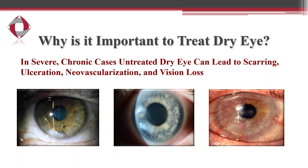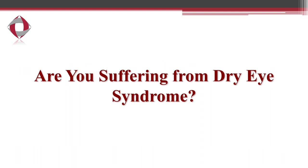Moving on to why it's important to treat dry eye — in severe chronic cases, untreated dry eye can lead to scarring (as shown in the middle photo), ulceration (as in the left photo), and neovascularization (in the right photo), where blood vessels grow onto the cornea. All of this can lead to vision loss over time. This basically concludes my presentation. Hopefully you were able to learn something about dry eye syndrome today. If any of you are suffering from dry eye or feel you may benefit from dry eye treatment, I encourage you to contact us and we'd be happy to help.